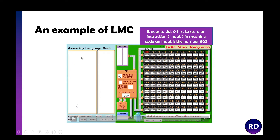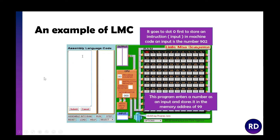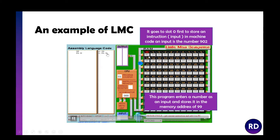Here's an example of how we use the LMC emulator. You can see the little slots on the side — all your instructions go inside slot 0, that's the first instruction, and then it converts into machine code. You've got your address and your slots. This program enters a number as an input and stores it in memory address 99. The STA instruction stores into memory slot 99, and you see it's converted into machine code 3994.